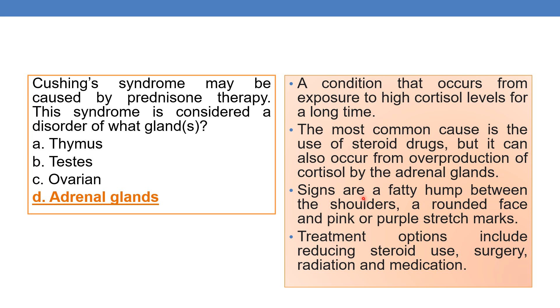The signs of Cushing syndrome are a fatty bump between the shoulders, a rounded face, and pink or purple stretch marks. Treatment options include reducing steroid use, surgery, radiation, and medication.